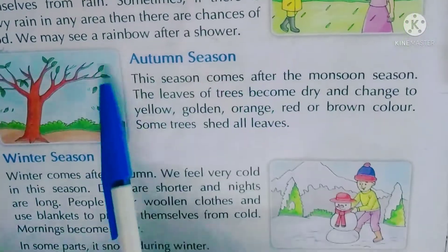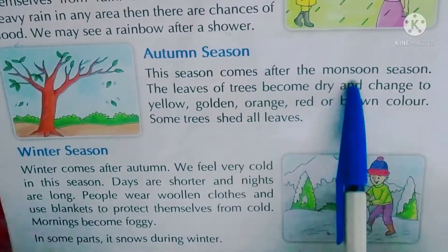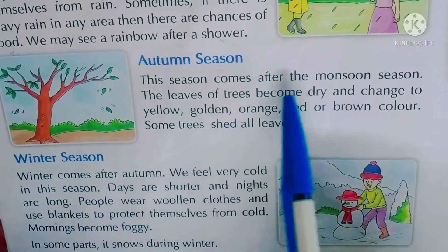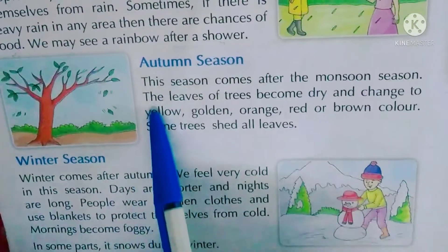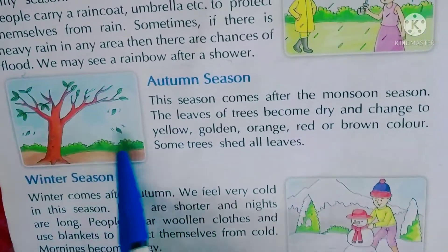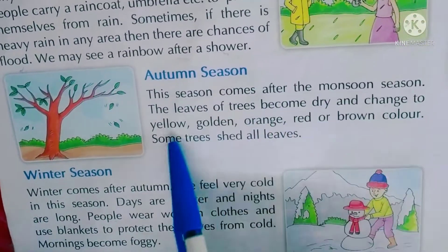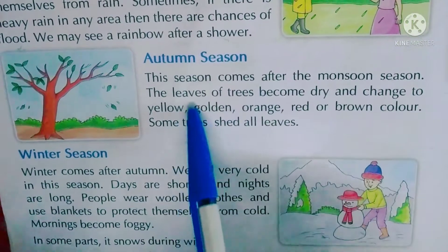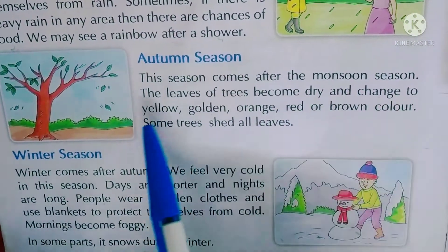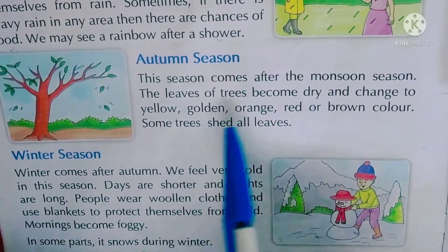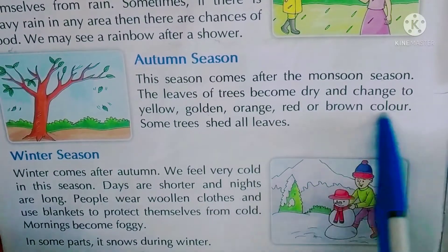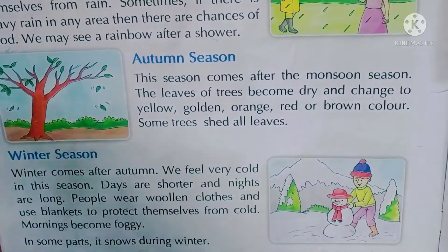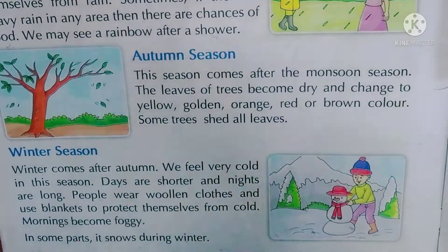Autumn season - पतझड़। This season comes after the monsoon season - बारिश के बाद, जो पत्तियाँ होती हैं वो सूख जाती हैं। उनका color पीले से सुनहरा, नारंगी, लाल और भूरा हो जाता है। कुछ ऐसे पेड़ होते हैं जिनकी सारी पत्तियाँ नीचे गिर जाती हैं।